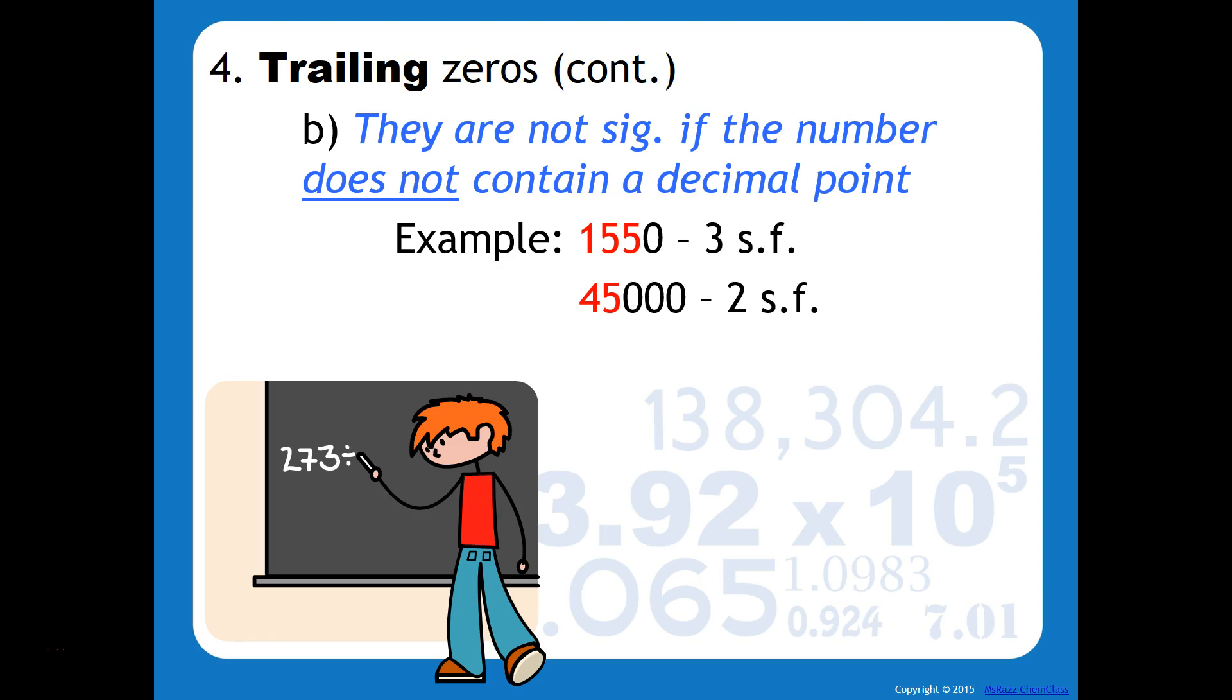In the number 45,000, there is no decimal point at the end of that number, so that's why only the 4 and the 5 would be considered significant.